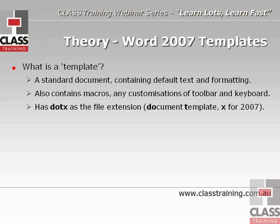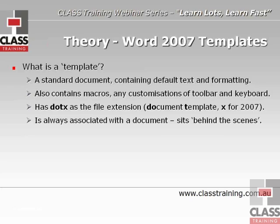In Word 2007, the extension is .dotx — D-O-T-X — which stands for document template, with X for the 2007 version. In older versions of Word it was just .dot, but with 2007 and beyond there's an X added to the extension. Any document you create or open in Word always has a template associated with it, whether you like it or not. Even a blank document created by pressing Ctrl+N has a default template associated with it.